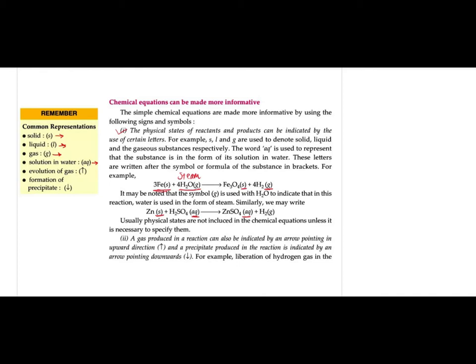Sometimes in front of H₂ they also show an upward arrow. An upward arrow indicates evolution of gas. A downward arrow indicates formation of precipitate. A precipitate is an insoluble substance which settles down in the container. Gases are always light and always get evolved upward.